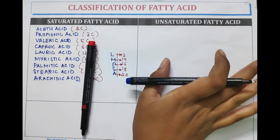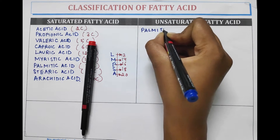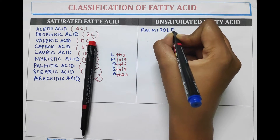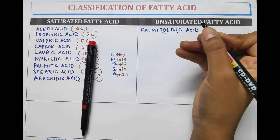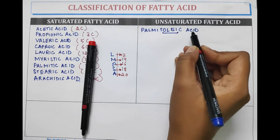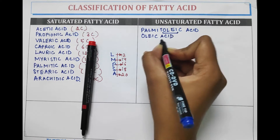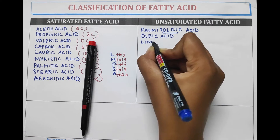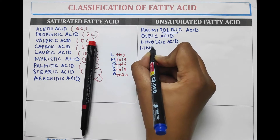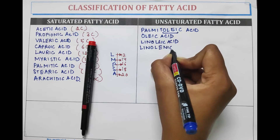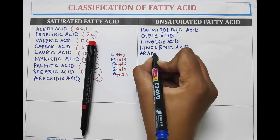Next are unsaturated fatty acids. The first one is palmitoleic acid. Generally, unsaturated fatty acids contain '-oleic' or '-olic' as a suffix. The unsaturated fatty acids include palmitoleic acid, oleic acid, linoleic acid, linolenic acid, and arachidonic acid.